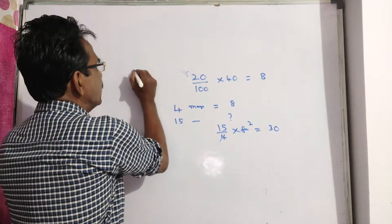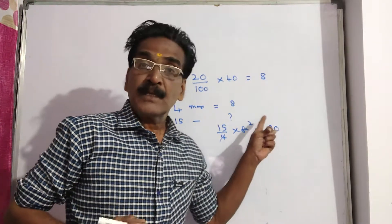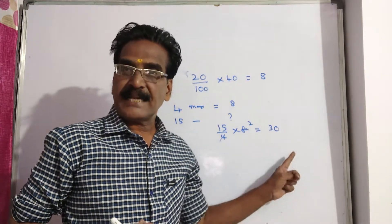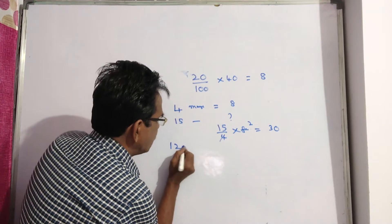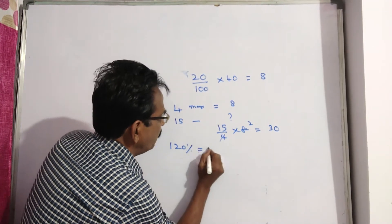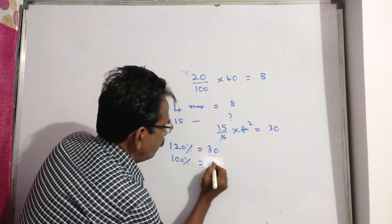So what is the increase here? 20% increase. That means this 30 rupees represents 120%. We want the original price of 15 mangoes.